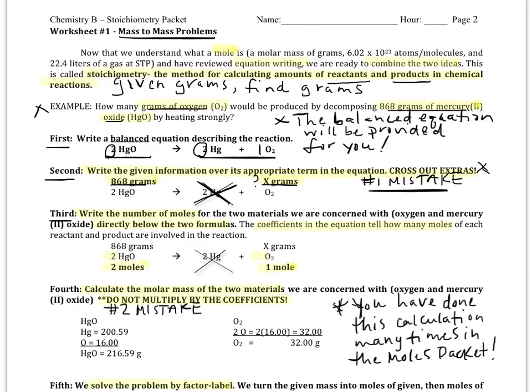Third step, you are going to write the number of moles below the formulas. So, here's where we look at the coefficients. Since there is a big 2 in front of the HgO, that tells us that we have 2 moles of mercury oxide to start off with. Since there is no coefficient in front of the oxygen, that tells us that we are ending with 1 mole of oxygen in this reaction. So, we rewrite them just to emphasize that.